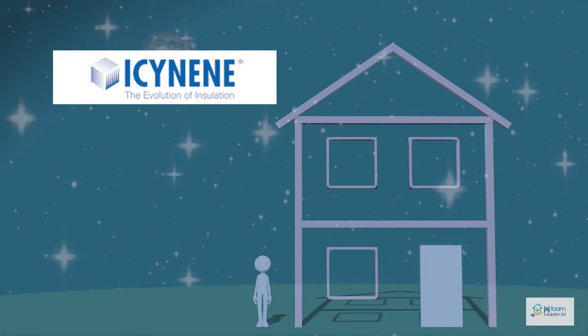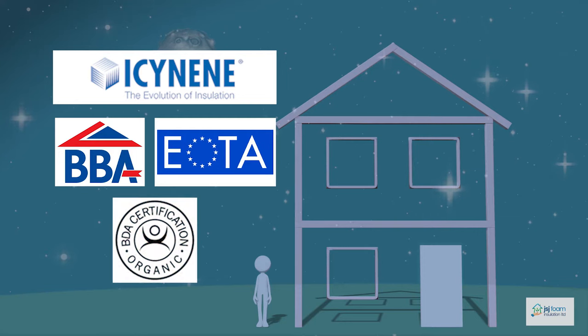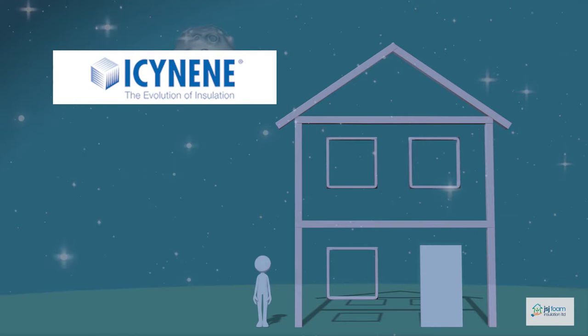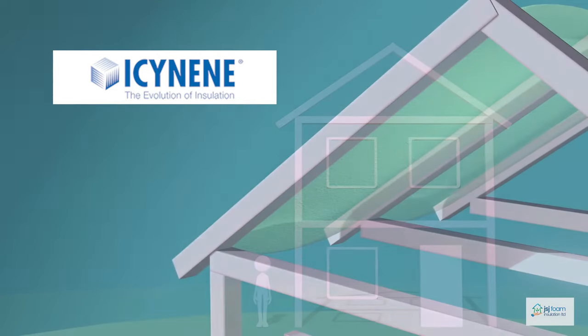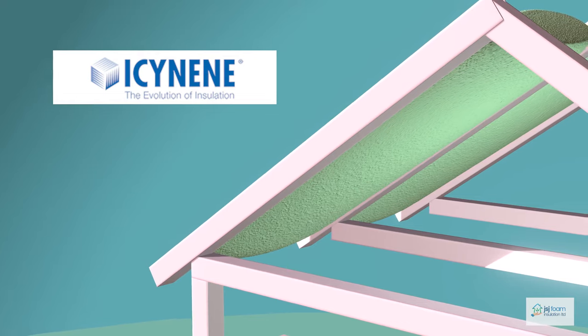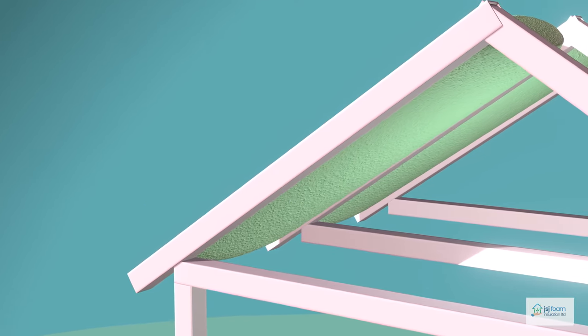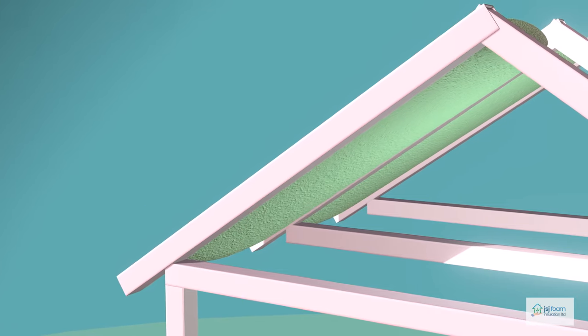Isene have achieved BBA, ETA and BDA certifications, and it's been successfully tested and certified for applications directly to the underside of breathable and non-breathable roof membranes and felts. It absorbs the lowest amount of moisture and has the highest level of vapor resistivity of any soft foam on the market.